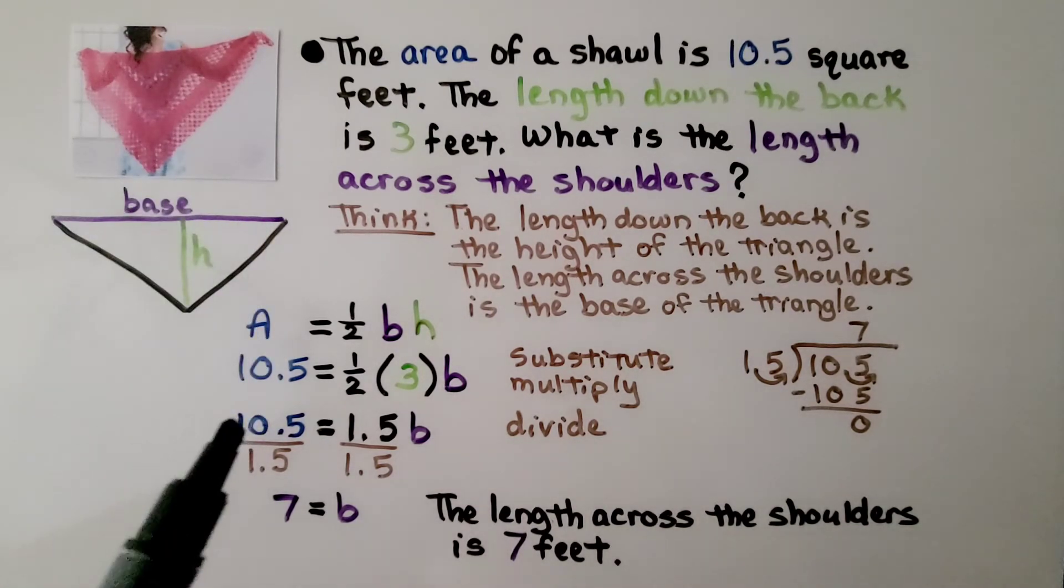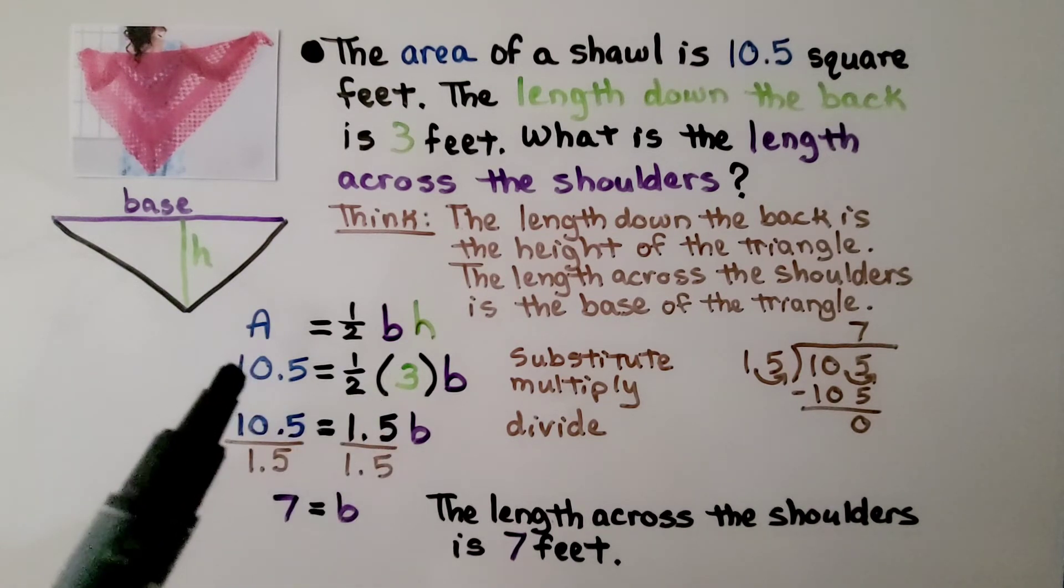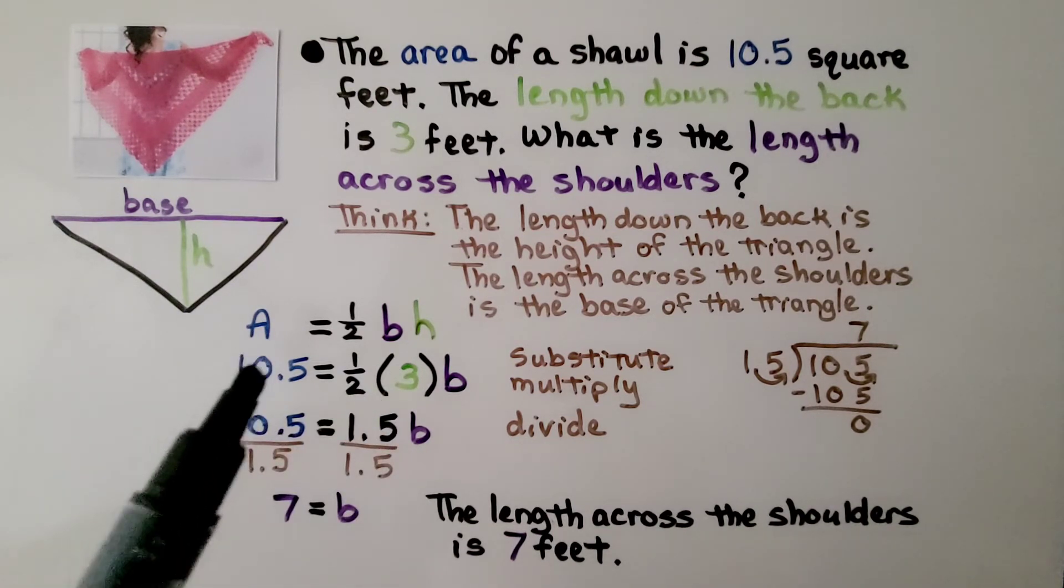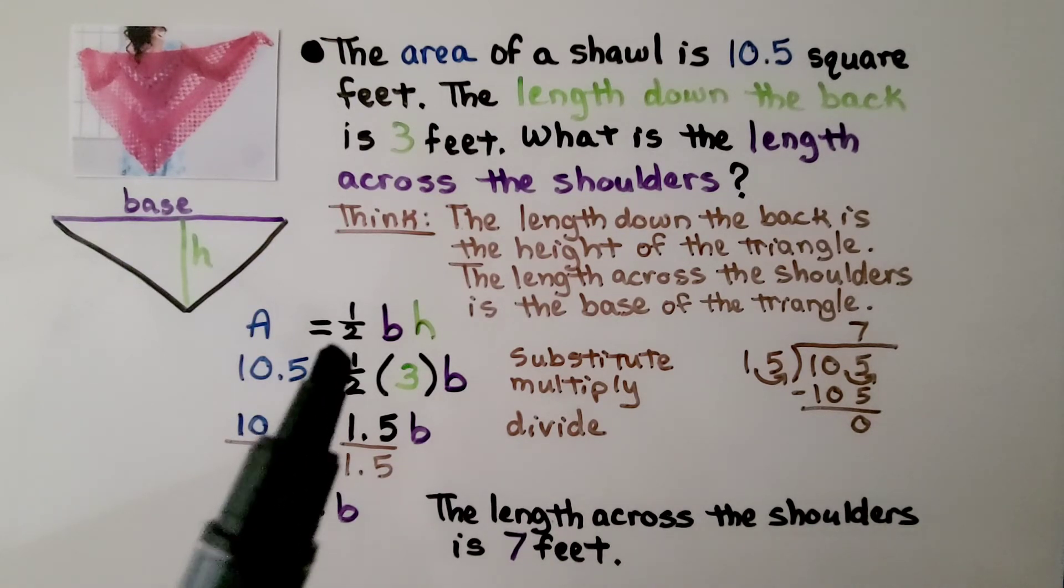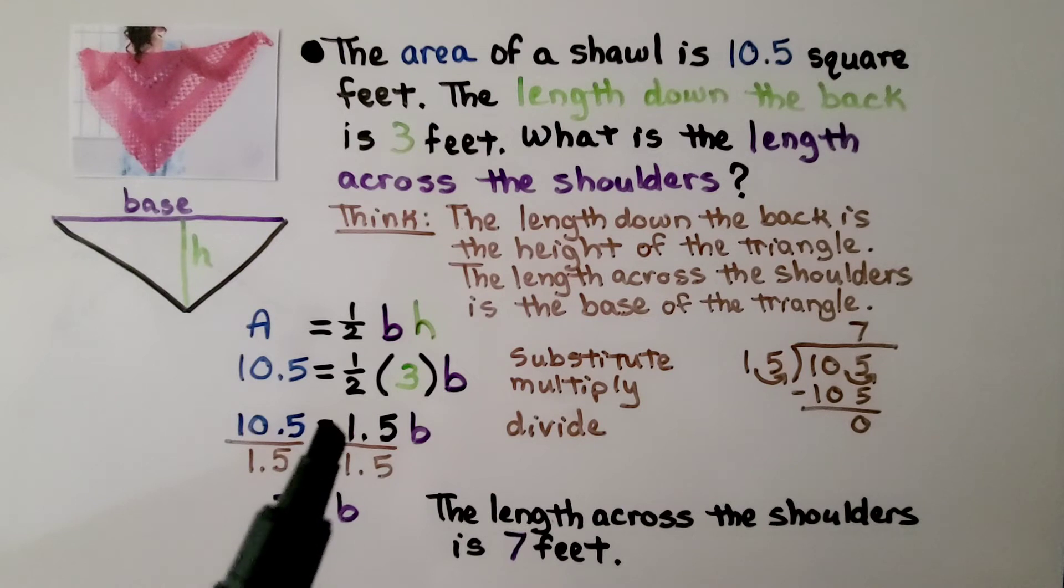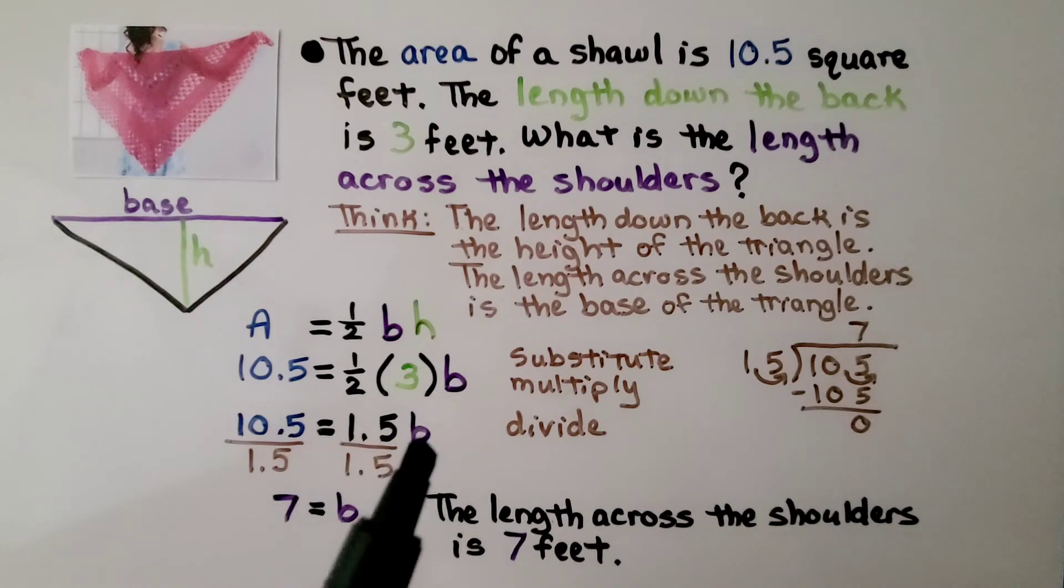When we know the height, 3, and we know the square feet is 10.5, we substitute it into our formula. We have half times 3, which is 1.5. We have our b.